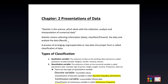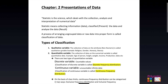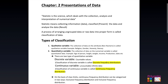The process of arranging ungrouped data or raw data into a proper form is called classification of data. There are two types of classification: one is qualitative and another one is quantitative.